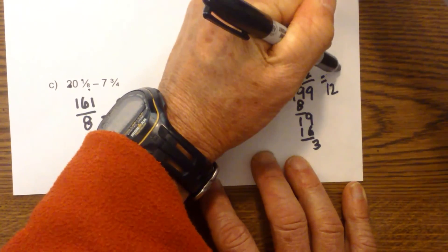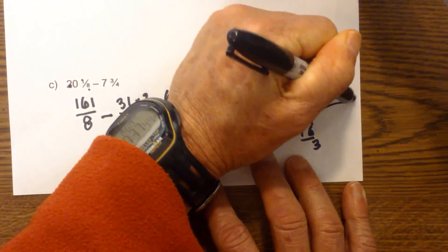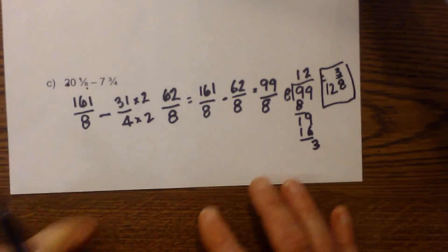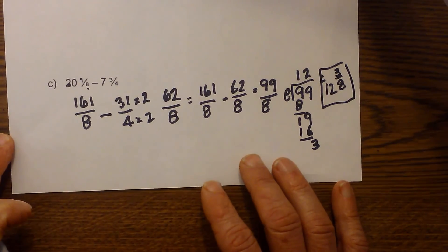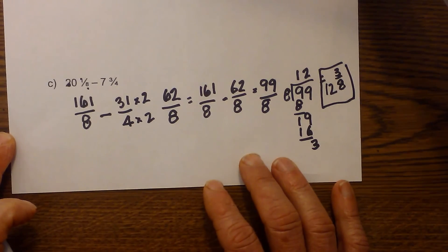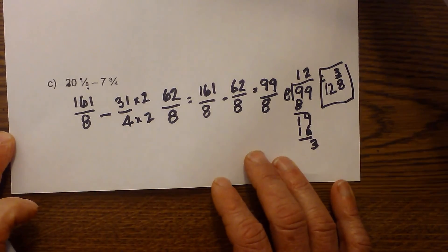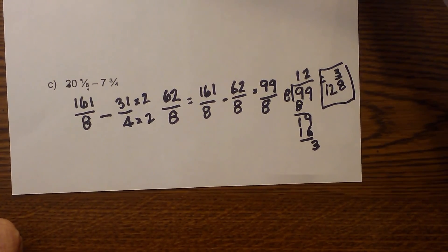That gets a little messy — twelve and three-eighths — but it's the same answer. Instead I just converted to an improper fraction and then subtracted. Thanks for watching, and you decide which method you like better. Moo Moo Math uploads a new math and science video every day — please subscribe and share.